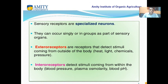Sensory receptors are specialized neurons. Neurons are related to the nervous system, and sensory receptors are a kind of special neuron — not ordinary neurons, but a special kind. They can occur singly or in groups as part of sensory organs.